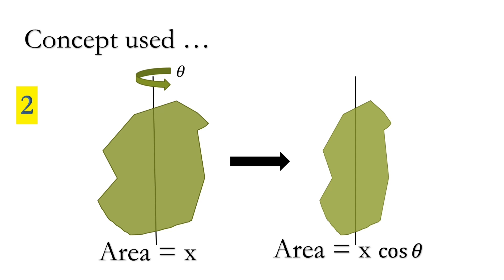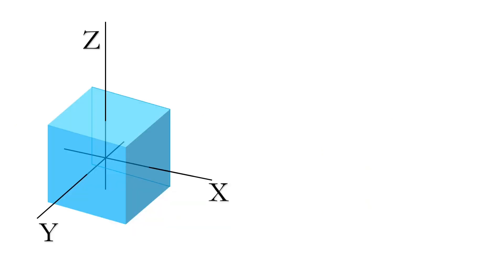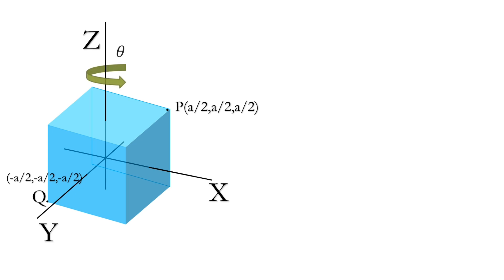Now suppose this is the cube and all its surfaces are perpendicular to the coordinate axes. Suppose one end is at (a/2, a/2, a/2) because all sides of the cube have the same length a, so its opposite end becomes (−a/2, −a/2, −a/2). Now if we rotate it about the z-axis through an angle theta and about the x-axis through an angle phi, it will look something like this.